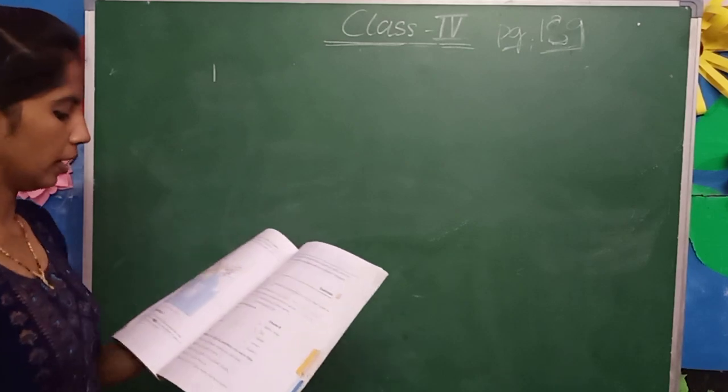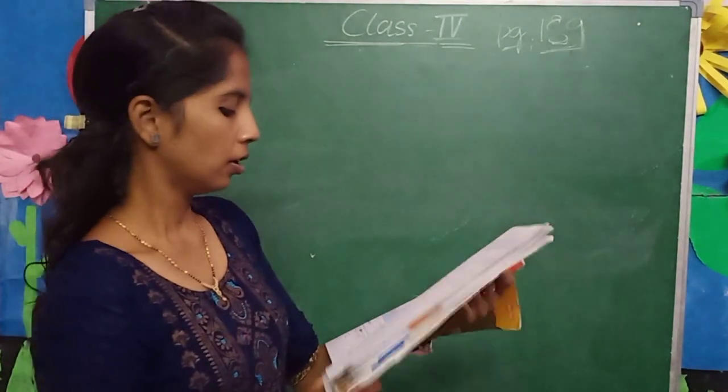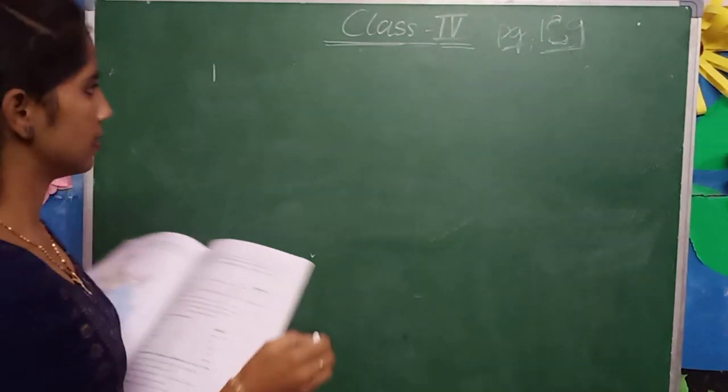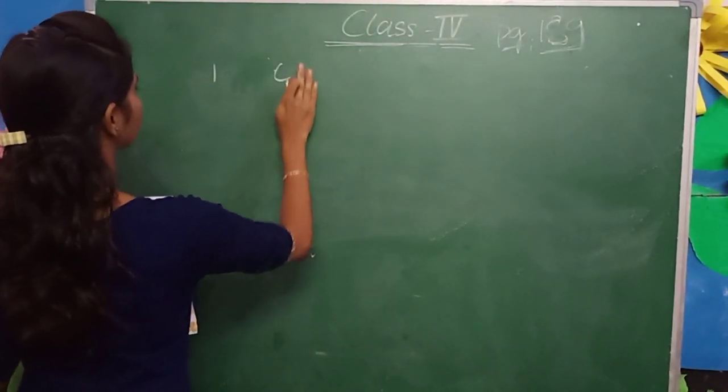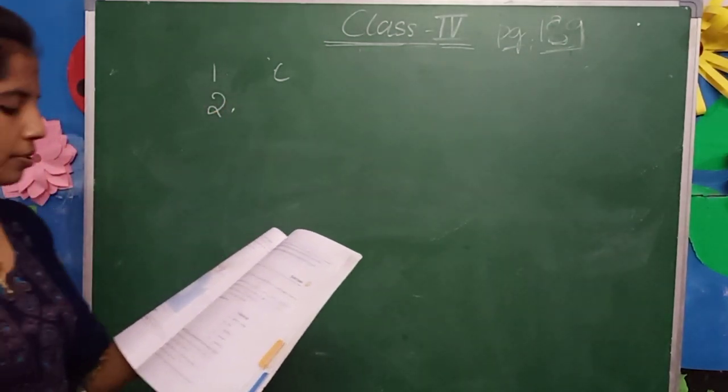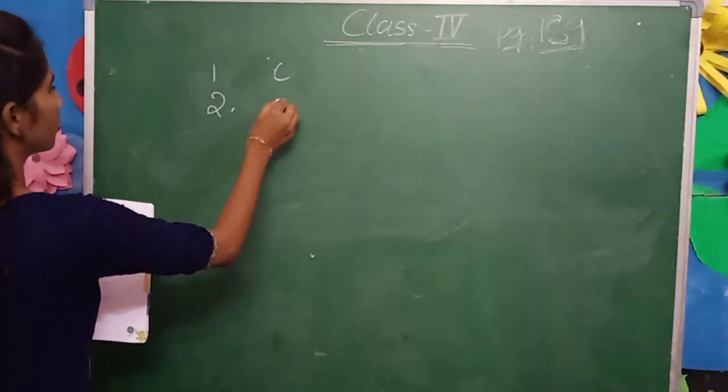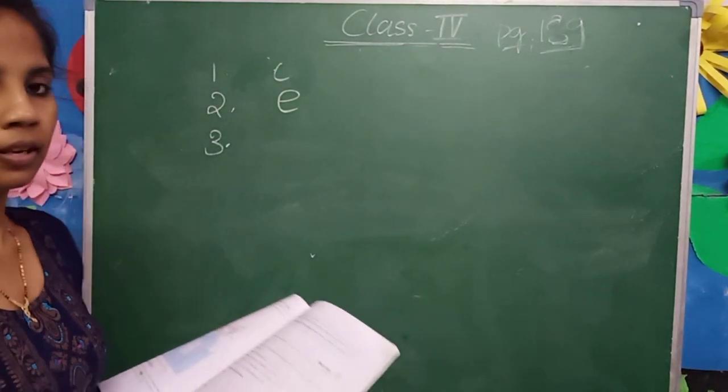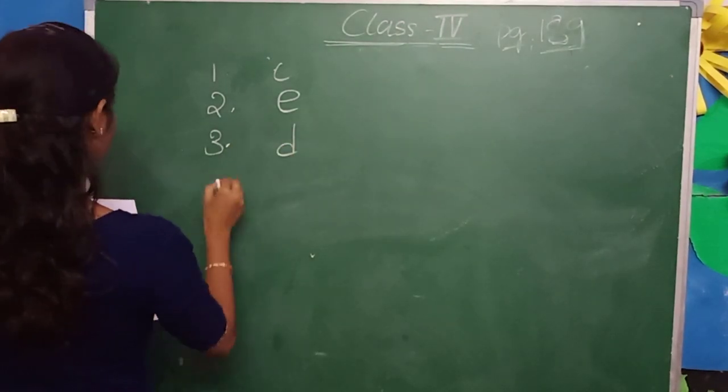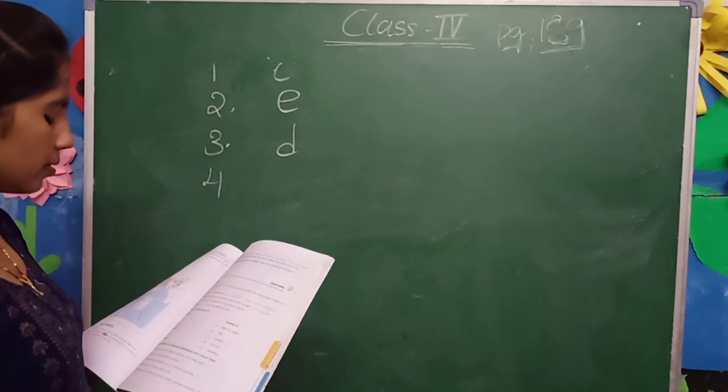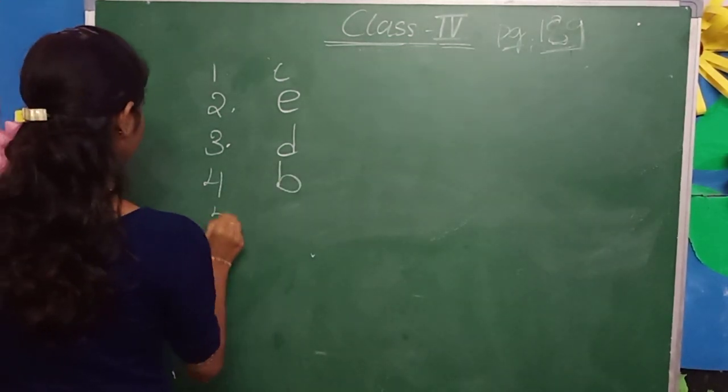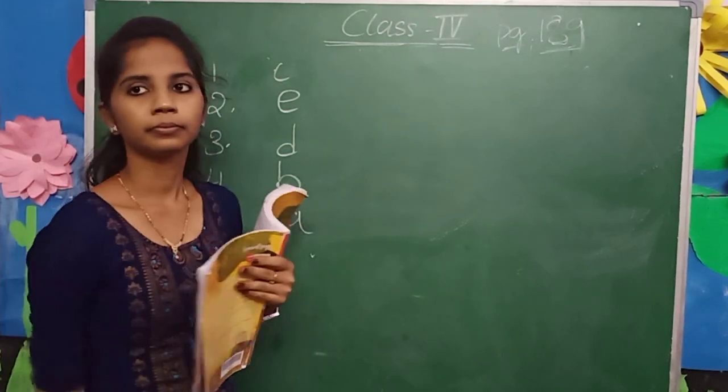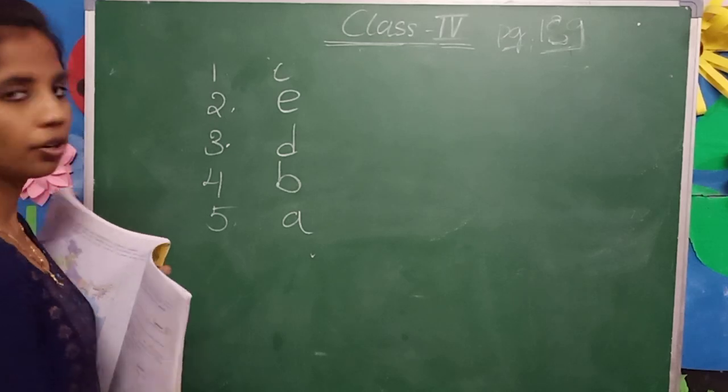And the next one, match the following. Column A, Column B. Iron, where do we use iron? Yes, in utensils, so write C there. Gold can be used in jewelries, so write E there. Limestone is used in cement, so write D there. Coal can be used as fuel, so write B there. Copper is used in electrical wire, so write A.